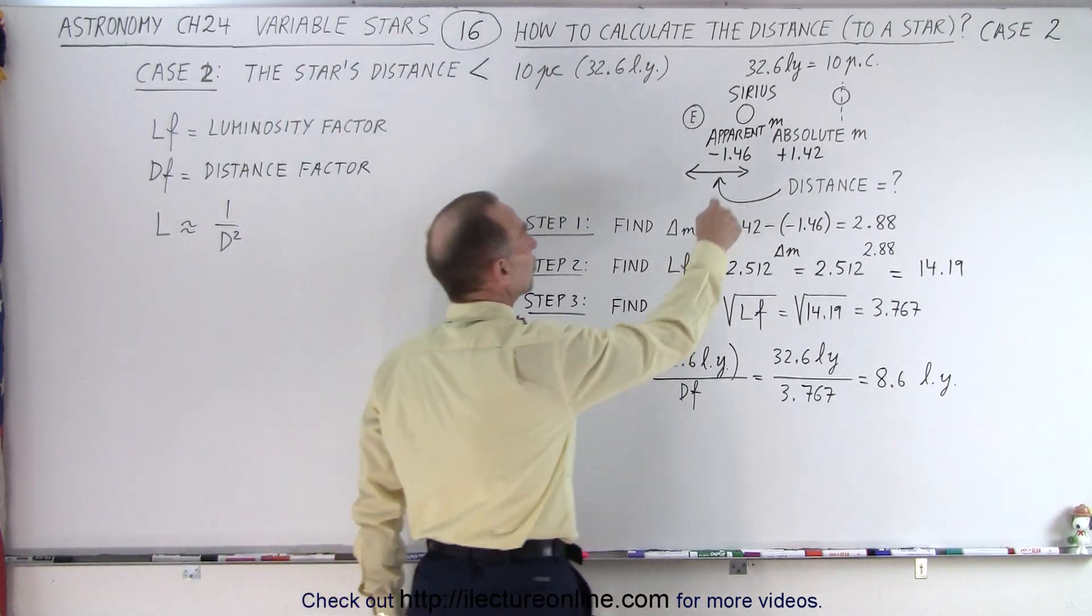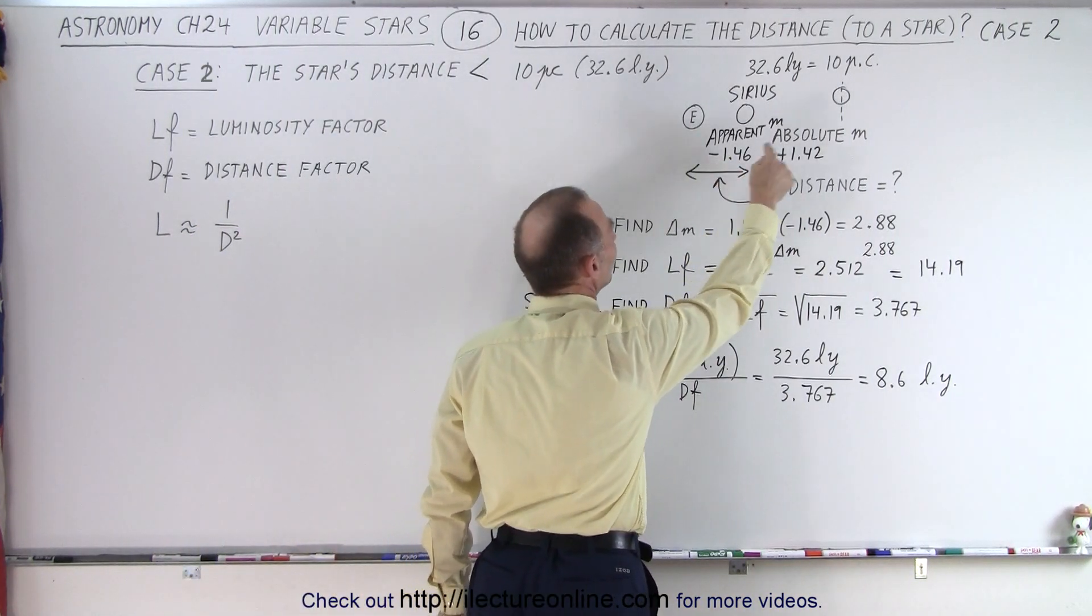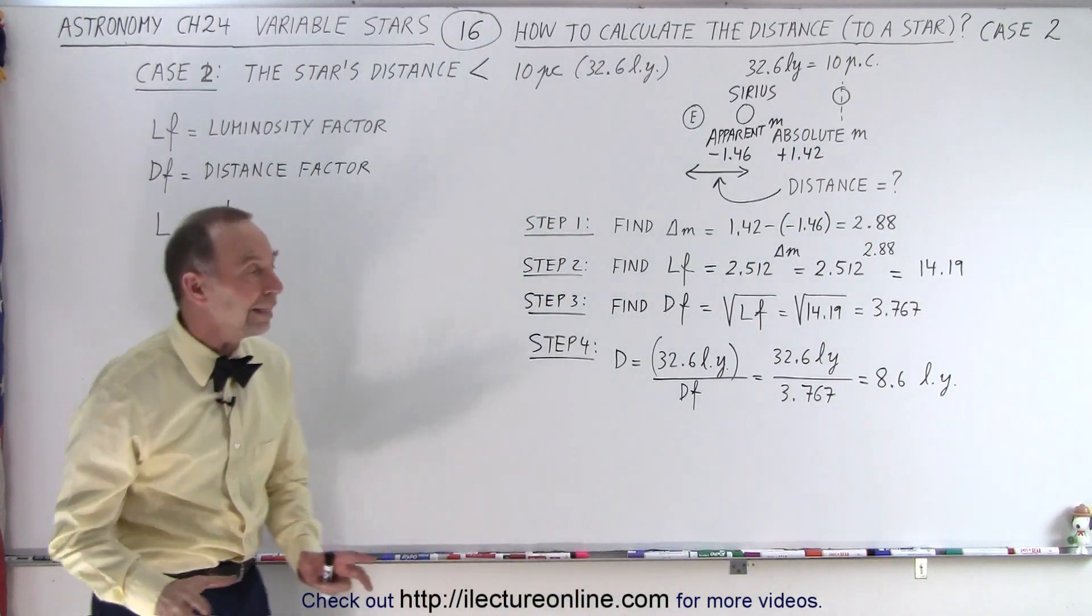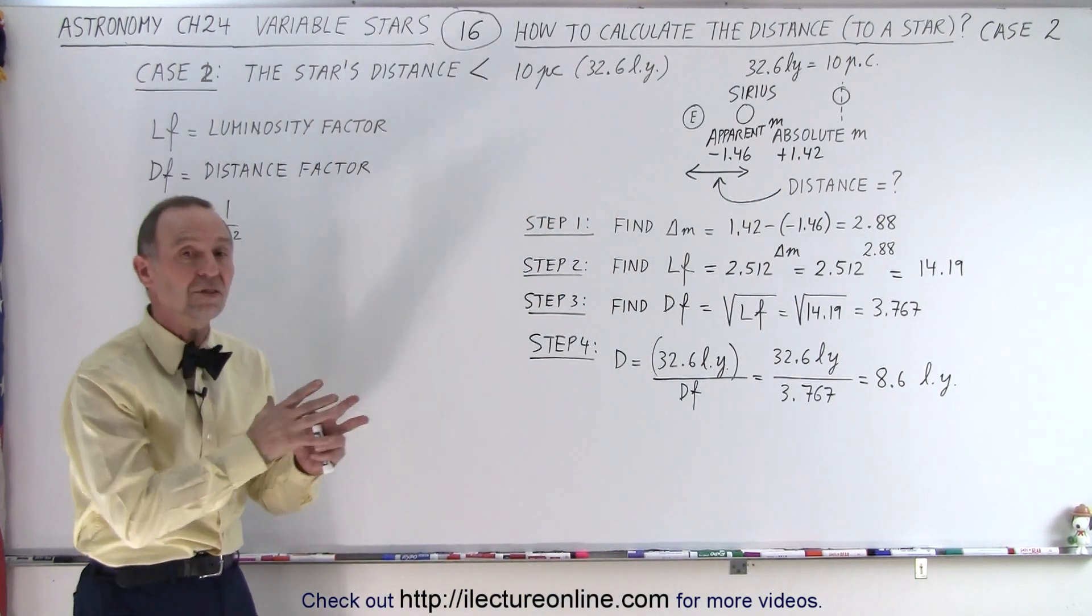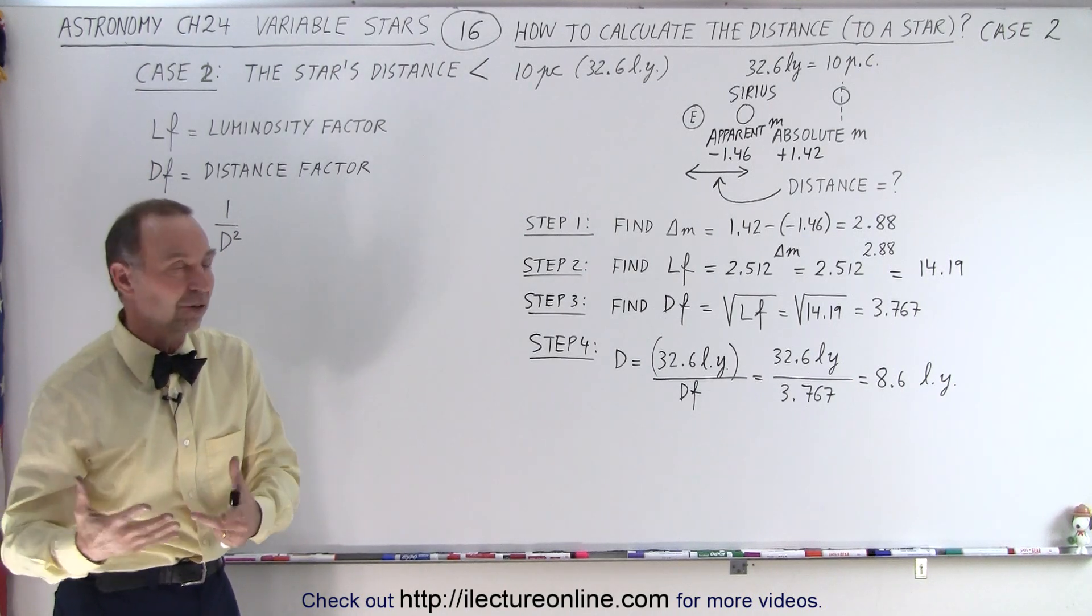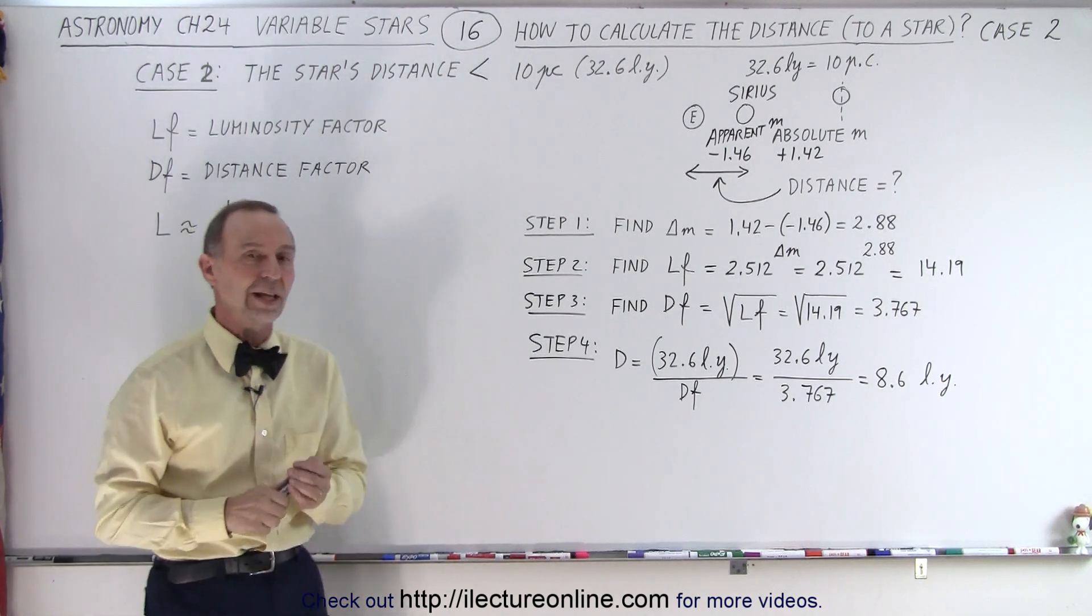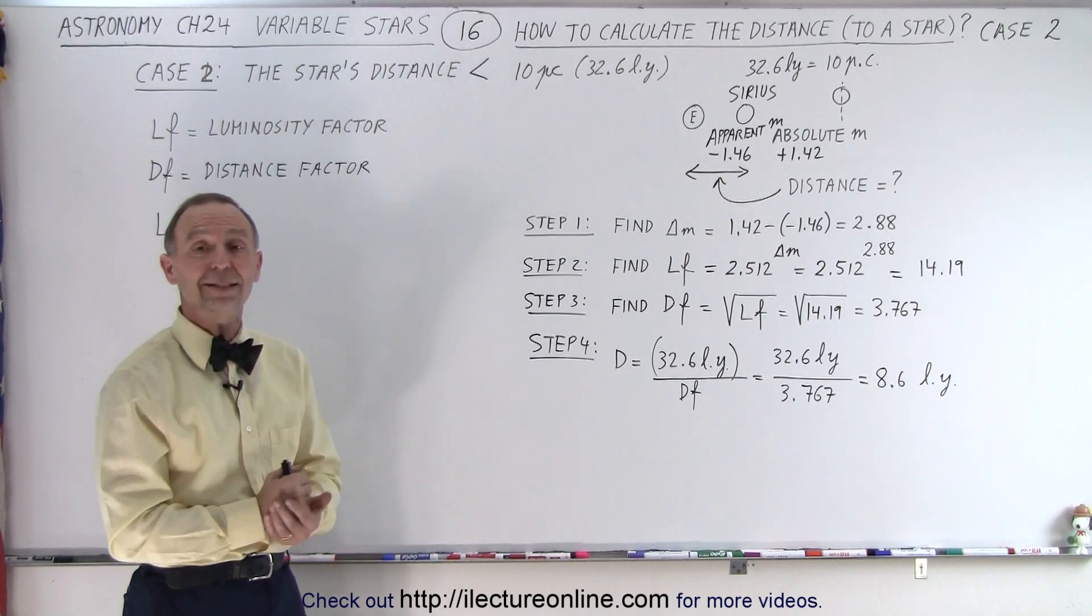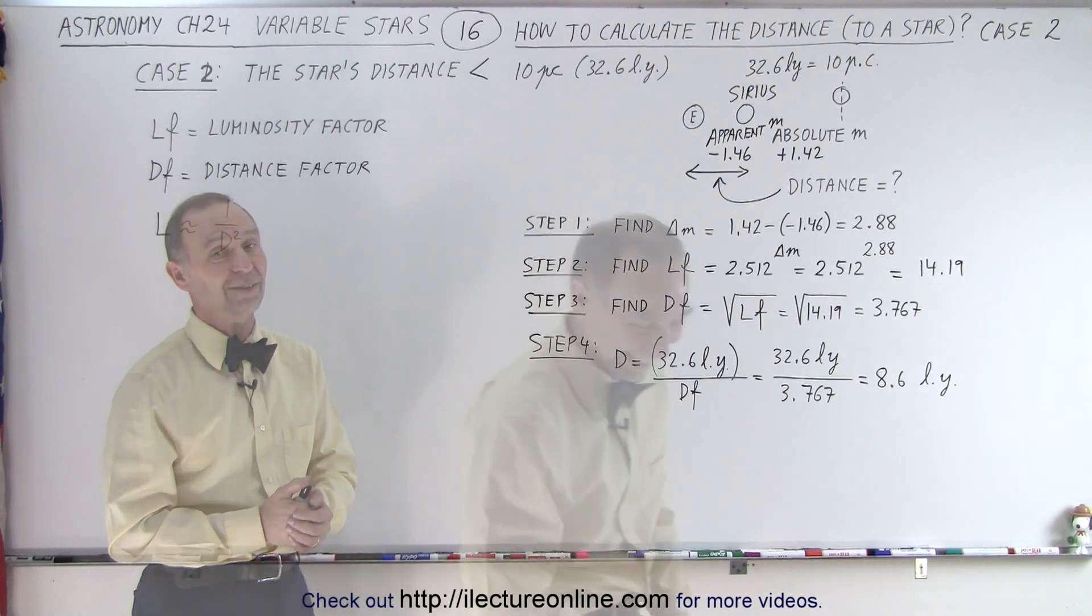And that is how we calculate the actual distance to a star that is closer than the standard distance of 10 parsecs or 32.6 light years. And that is how it's done. So I could have calculated it instead of asking you to find the distance.